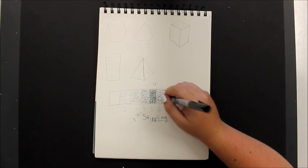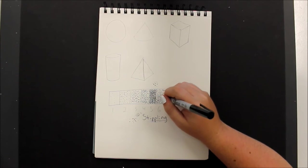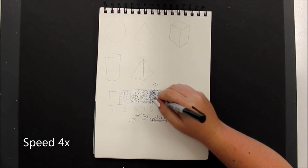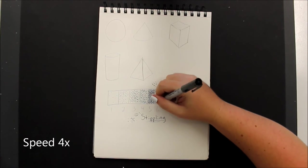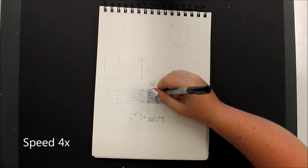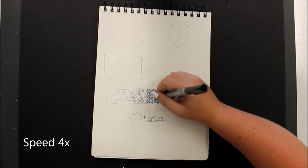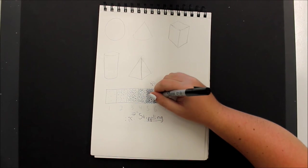If you accidentally go over the same dot twice, that's okay. Just keep working. Just remember, you don't want to go too dark too quickly. You can always add more later if you take another look at it.